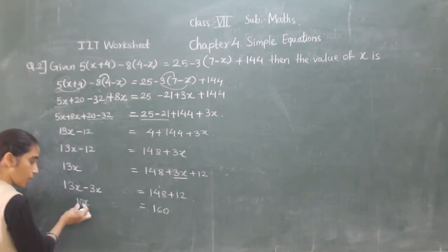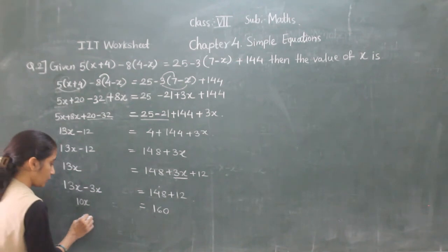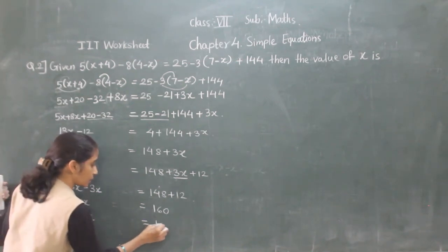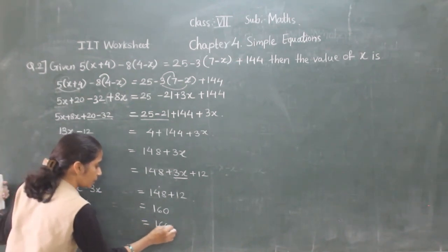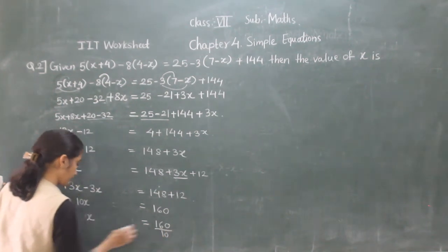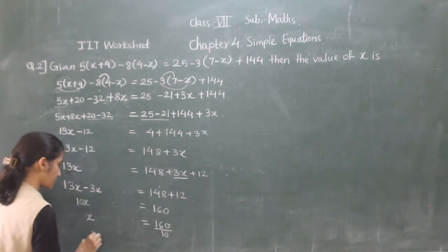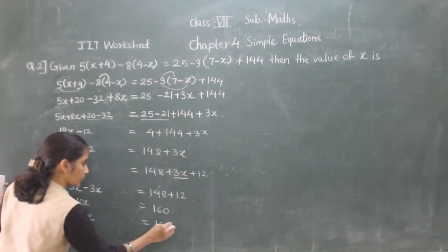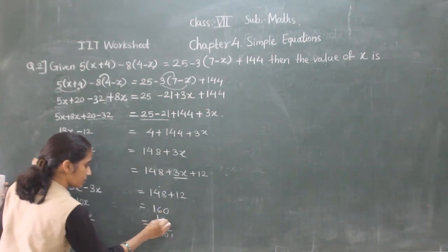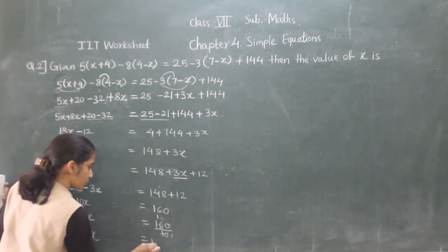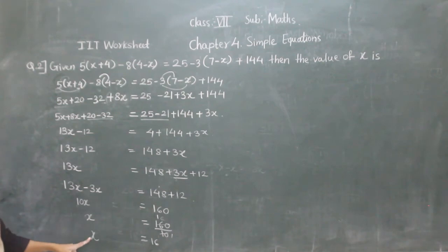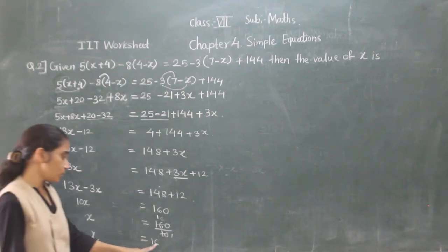So 13x minus 12 is equal to 148 plus 3x. Transfer minus 12 to the right hand side, it becomes plus 12: 13x equals 148 plus 3x plus 12. Transfer plus 3x to the left hand side, it becomes minus 3x. So 13x minus 3x is 10x, and 148 plus 12 is 160. So 10x equals 160, and x equals 160 divided by 10, so x is equal to 16.